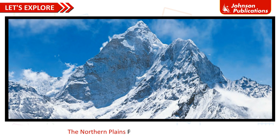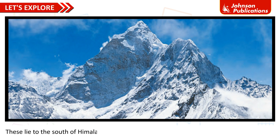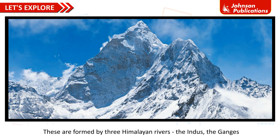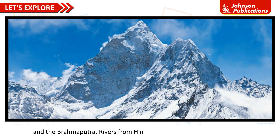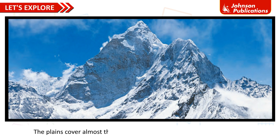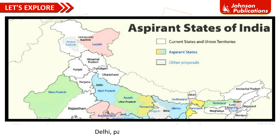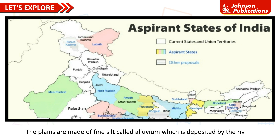Plains are flat and level lands. The Northern Plains lie to the south of the Himalayas and stretch from Punjab in the west to Assam in the east. They are formed by three Himalayan rivers — the Indus, the Ganges, and the Brahmaputra. The plains cover almost the whole of Punjab, Uttar Pradesh, West Bengal, Delhi, and parts of Bihar and Assam. The plains are made of fine silt called alluvium, deposited by the rivers.